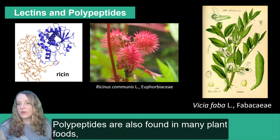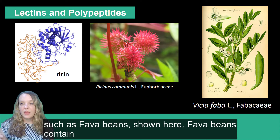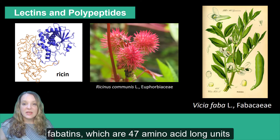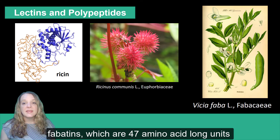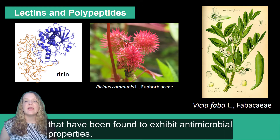Polypeptides are also found in many plant foods, such as fava beans shown here. Fava beans contain fabatins, which are 47 amino acid long units that have been found to exhibit antimicrobial properties.